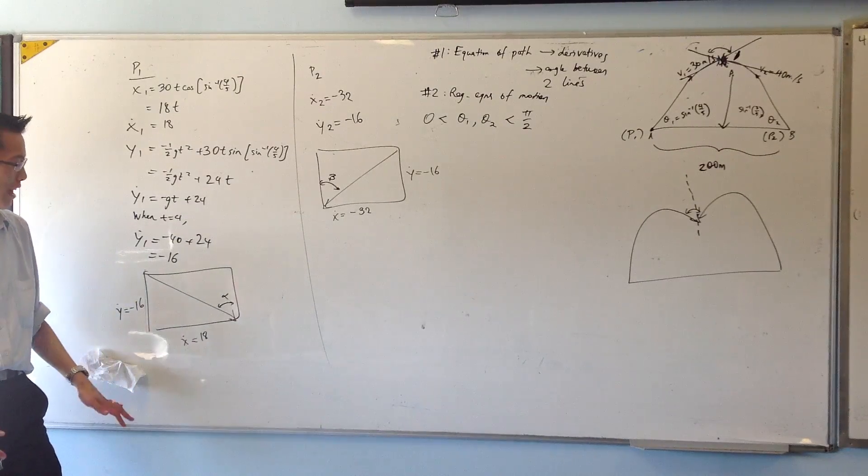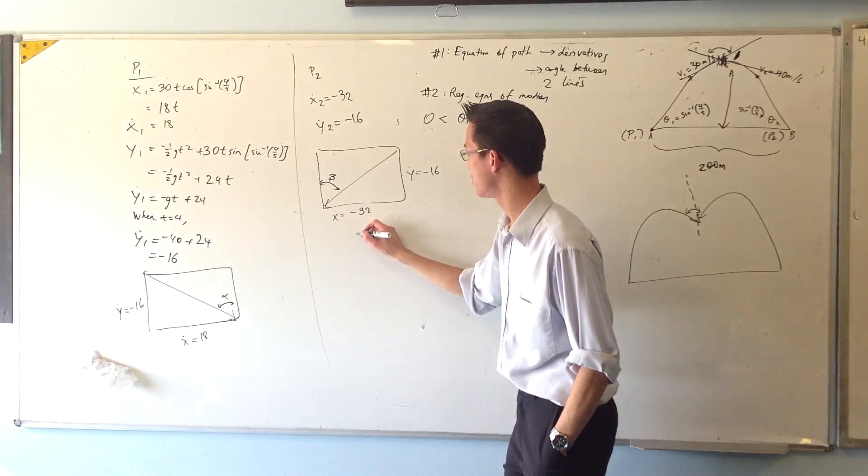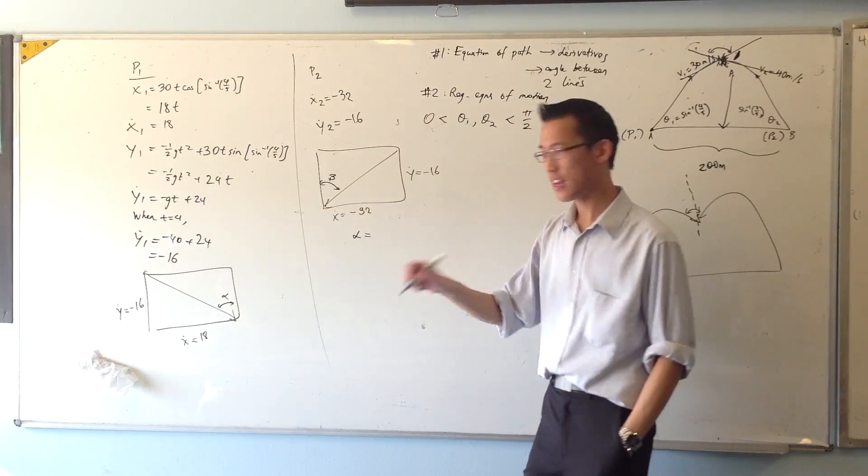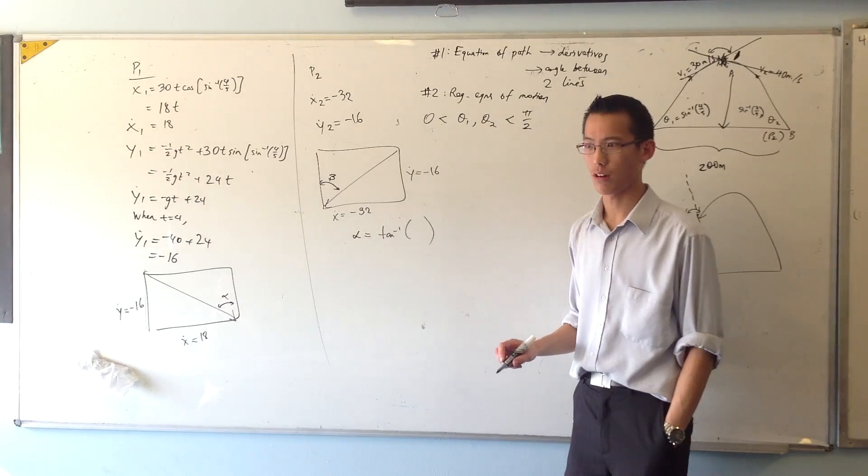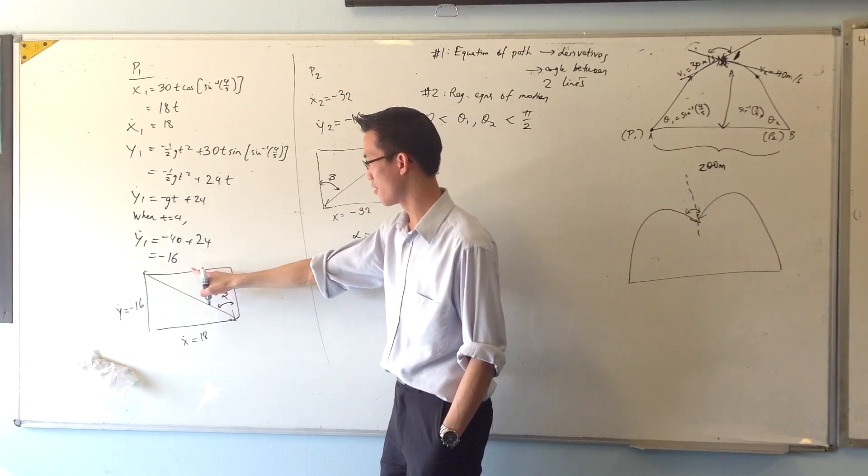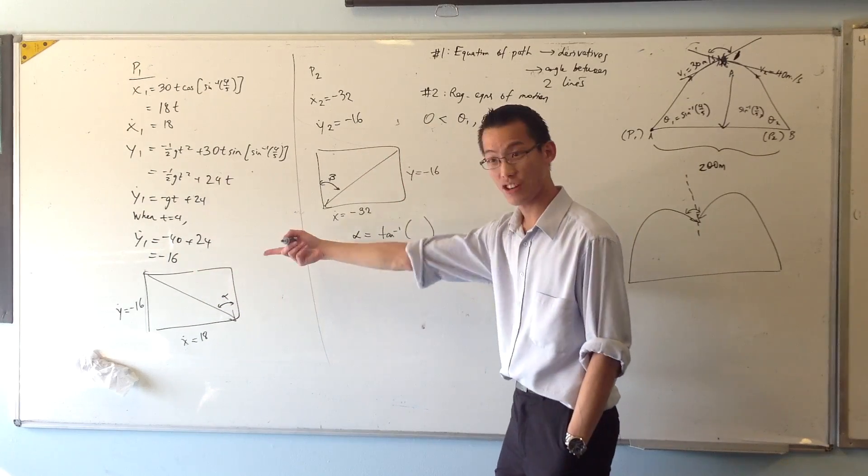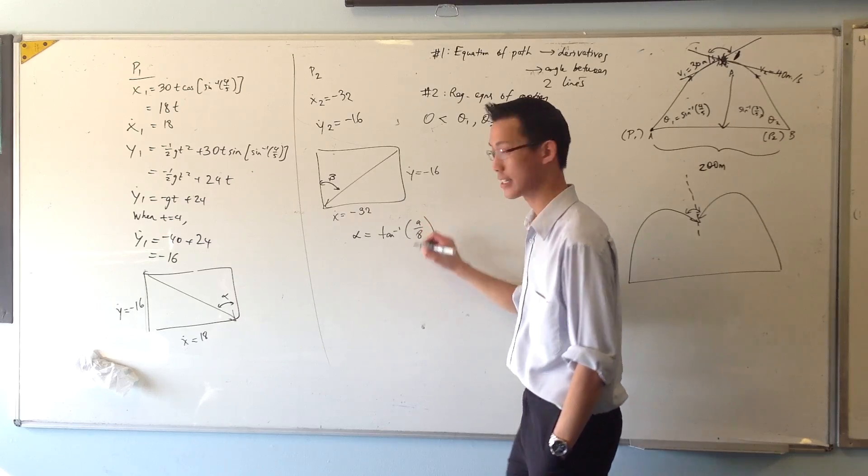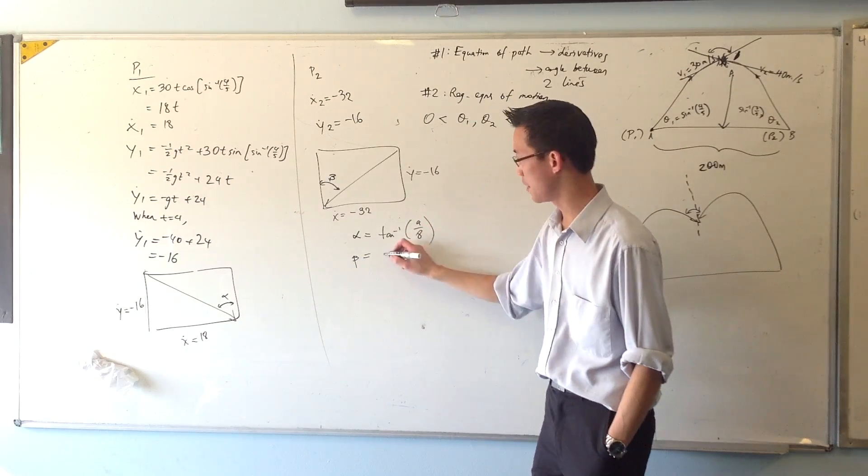For alpha, that's going to be tan inverse of opposite over adjacent. So that's 18 on 16, which is 9 over 8. Here's alpha. Beta will be...